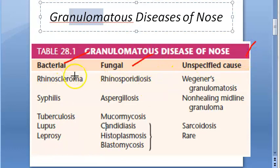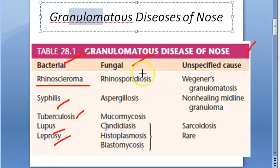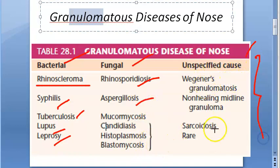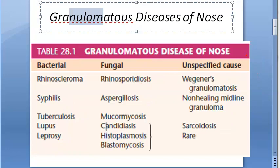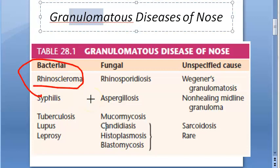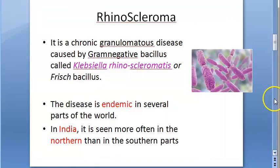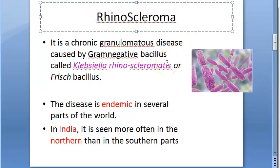Under granulomatous diseases of the nose, we have bacterial causes — tuberculosis, leprosy, lupus, syphilis, and rhinoscleroma — fungal causes like rhinosporidiosis and aspergillosis, and unspecified causes like Wegener's granulomatosis and sarcoidosis. Rhinoscleroma is caused by Klebsiella bacteria, while rhinosporidiosis is caused by a spore-forming fungus.